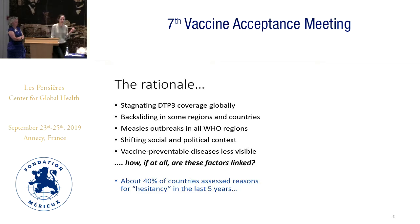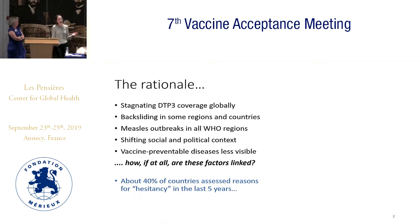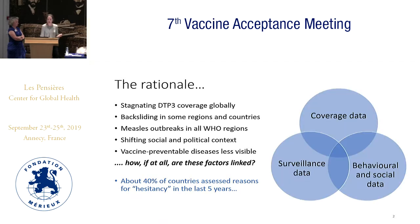What data do countries actually have access to? Based on data that WHO gathers on an annual basis from countries, we know that about 35 to 40 percent of countries are assessing hesitancy or have assessed hesitancy in the last five years or so. So there's a real lack of quality data, mainly in low- and middle-income countries, that can explain these various trends and identify the causes of under-vaccination.